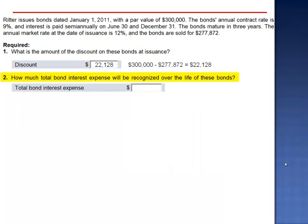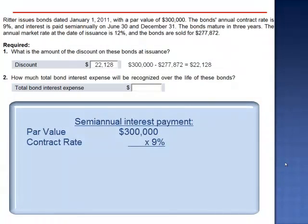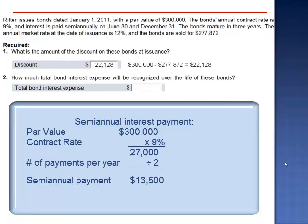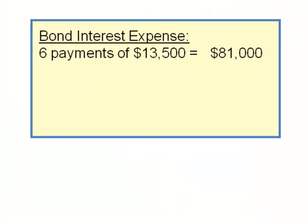How much total bond interest will be recognized over the life of these bonds? We calculate the difference between what gets repaid and what gets borrowed. These bonds have a par value of $300,000 and the contract rate is 9%. The contractual obligation is to repay 9% of $300,000 — $27,000 per year. Since the bond's interest is paid semi-annually, this $27,000 is divided by 2: 2 payments per year of $13,500. In total, over the 3-year term, there will be 6 payments of $13,500, a total of $81,000 in interest payments.